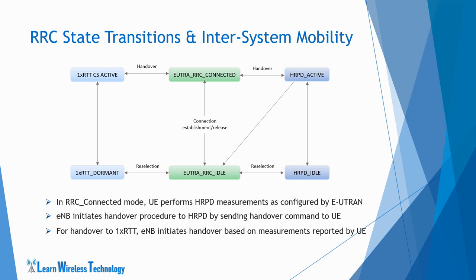For handover from eUTRAN to 1xRTT, the UE performs measurements of 1xRTT cells and based on the measurement report, the eNodeB commands the UE to perform handover to 1xRTT. Also, if the UE supports CS fallback, then on making a voice call in eUTRAN RRC connected mode, the UE shall move to the CS domain of 1xRTT.